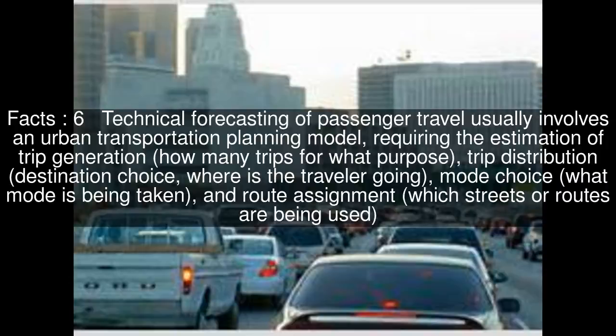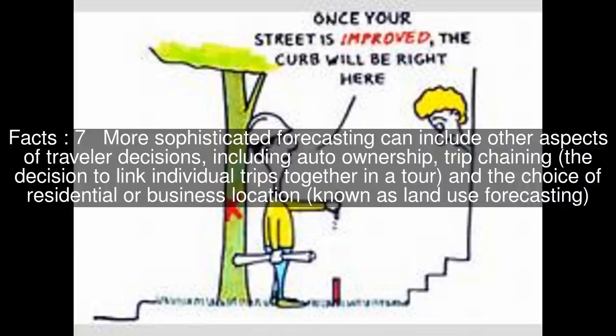Further steps include mode choice — what mode is being taken — and route assignment — which streets or routes are being used. More sophisticated forecasting can include other aspects of traveller decisions, including auto ownership, trip chaining — the decision to link individual trips together in a tour — and the choice of residential or business location, known as land use forecasting.